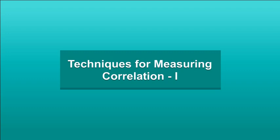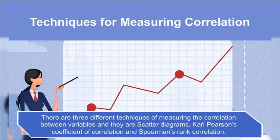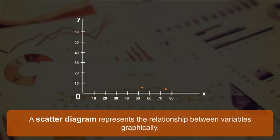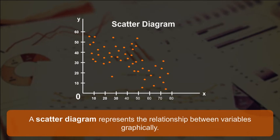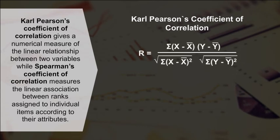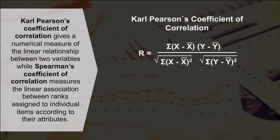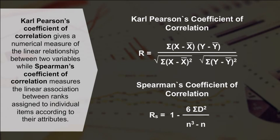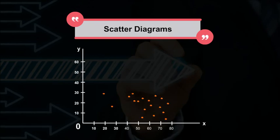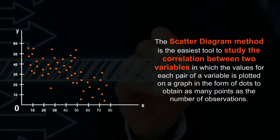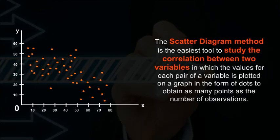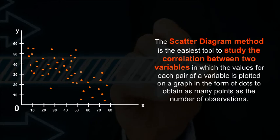There are three different techniques for measuring correlation: scatter diagrams, Carl Pearson's coefficient of correlation, and Spearman's rank correlation. A scatter diagram represents the relationship between variables graphically. The scatter diagram method is the easiest tool to study correlation, in which values for each pair of variables are plotted on a graph as dots to obtain as many points as the number of observations.